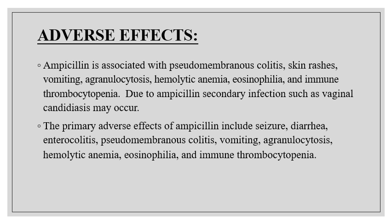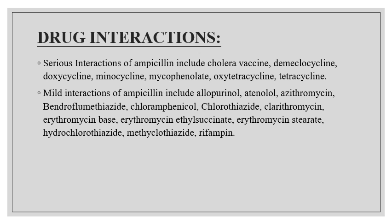Regarding drug interactions of ampicillin: ampicillin reacts with probenecid to decrease renal excretion. Large doses of ampicillin can increase the risk of bleeding with concurrent use of warfarin and other oral anticoagulants, possibly by inhibiting platelet aggregation. Ampicillin has been said to make oral contraceptives less effective, though this has been disputed. It can also be made less effective by other antibiotics such as chloramphenicol, erythromycin, cephalosporin, and tetracycline.